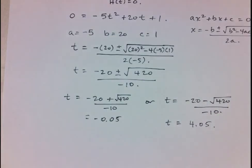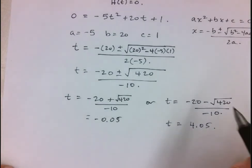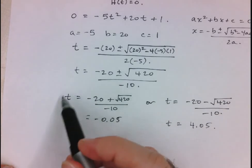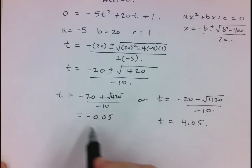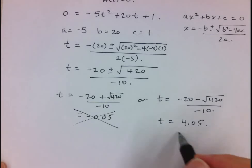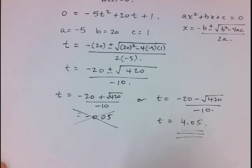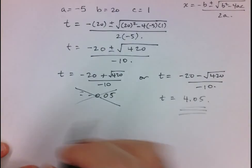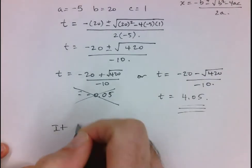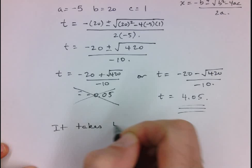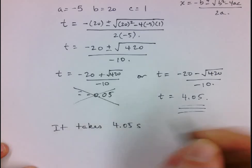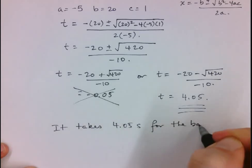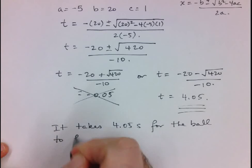Now, it would be tempting to just give these two as my answers, however, we know that our variable represents time. So it doesn't make sense to include this answer here, we're not considering negative time, so the only answer that we're going to consider here is the 4.05. So here we can say it takes 4.05 seconds for the ball to hit the ground.